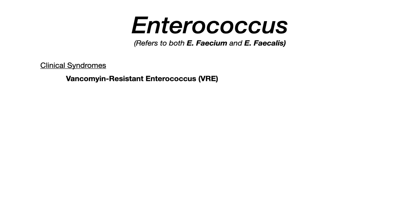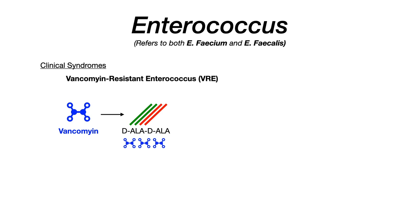Let's talk about the pathophysiology. Vancomycin normally binds to the D-ala-D-ala portion of the peptidoglycan. Think of peptidoglycan as random strands — depicted here as red and green — that cross-link to shore up the bacterial cell wall, making it sturdy and impenetrable for the bacteria. Vancomycin inhibits this cross-linking by binding D-ala-D-ala, so the bacterial cell wall never gains that structural integrity.